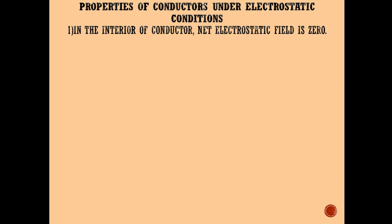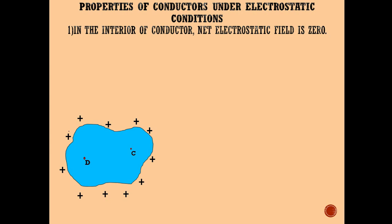Now we consider the properties of a conductor under electrostatic conditions. The first property: in the interior of a conductor, the net electrostatic field is zero. Consider a conductor, neutral or charged. When there is no current inside or on the surface, the conductor is said to be in static condition. In the static situation, force acting on charges is zero — charges at all interior points are stationary. In the static situation, free charges distribute themselves such that the electrostatic field is zero everywhere inside the conductor.